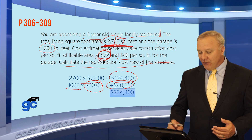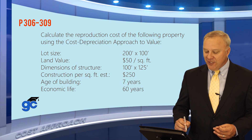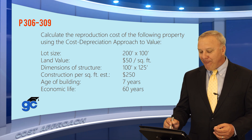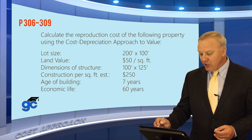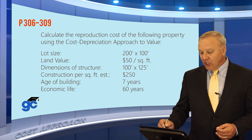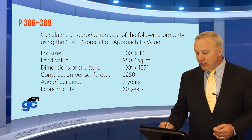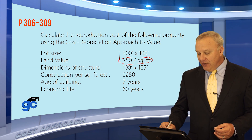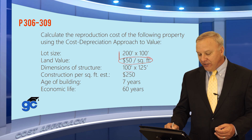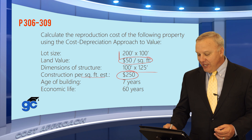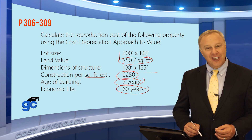Let's go one step further to another question. This one says calculate the reproduction cost of the following property using the cost depreciation approach to value. They've told you the lot size is 200 by 100, land value is $50 per square foot, dimensions of the structure are 100 by 125, cost per square foot is estimated at $250, age of the building is seven years, and the economic life is 60 years.